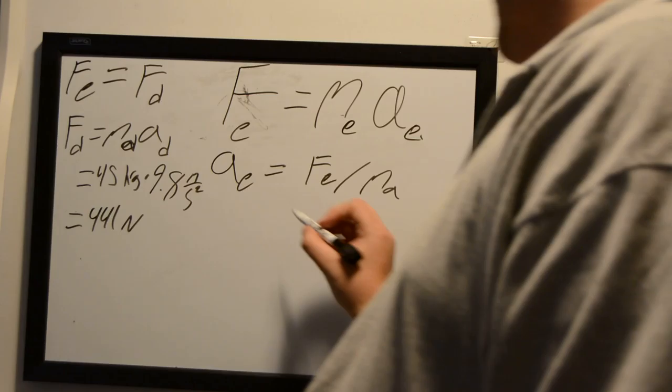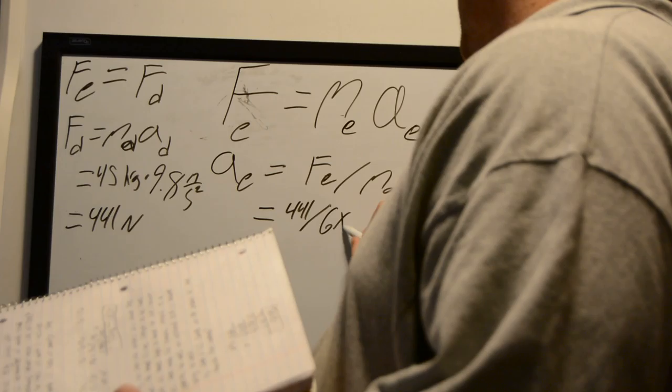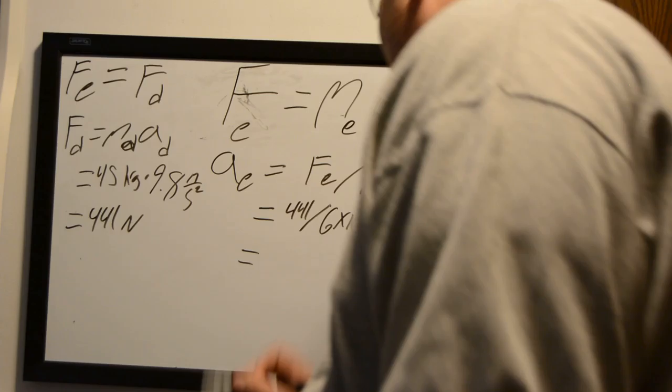So now we have that the acceleration is equal to 441 newtons divided by the mass of the earth, which in the problem we're given is 6 times 10 to the 24th kilograms.